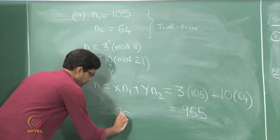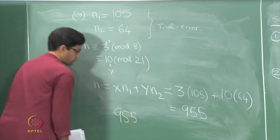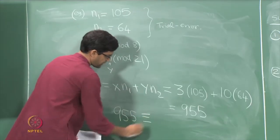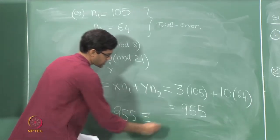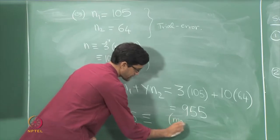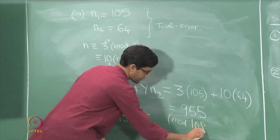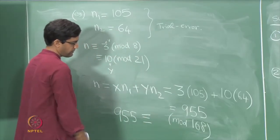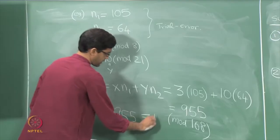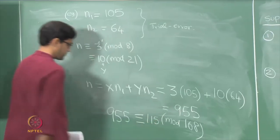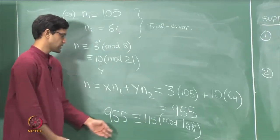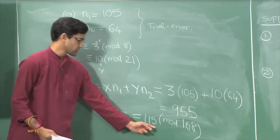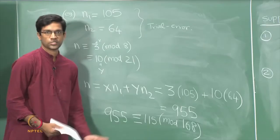To find the smallest natural number, all you do is find the remainder when you divide 955 by 168. Since 840 is 168 times 5, and 955 is exactly 115 more than that, 955 is congruent to 115 modulo 168. So 115 is the smallest natural number solution — the same answer we got before by brute force.